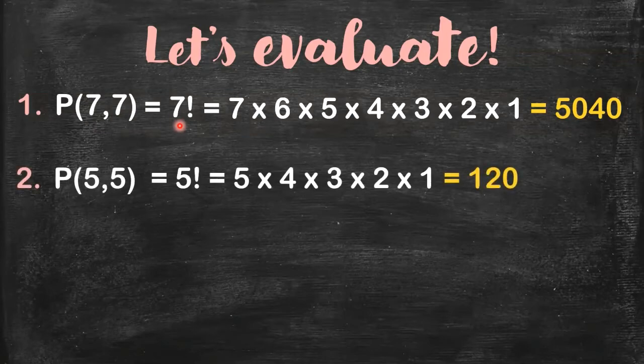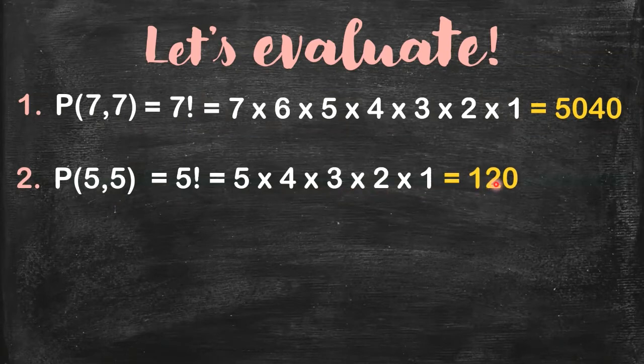For example, this: 5, 5. So to get its numerical value, this is just equal to 5 factorial. 5 times 4, 20. 20 times 3, 60. 60 times 2, 120.